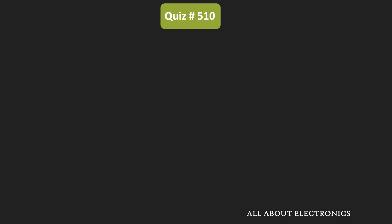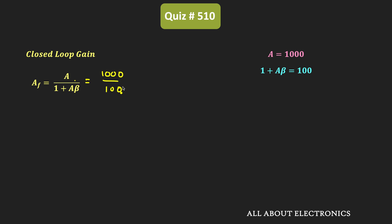Now with negative feedback, the closed-loop gain of the amplifier is A/(1+Aβ). The open-loop gain A = 1000 and 1+Aβ = 100, so the closed-loop gain AF = 1000/100 = 10. For one such feedback amplifier, the closed-loop gain is 10 and the gain stability is 0.1%.